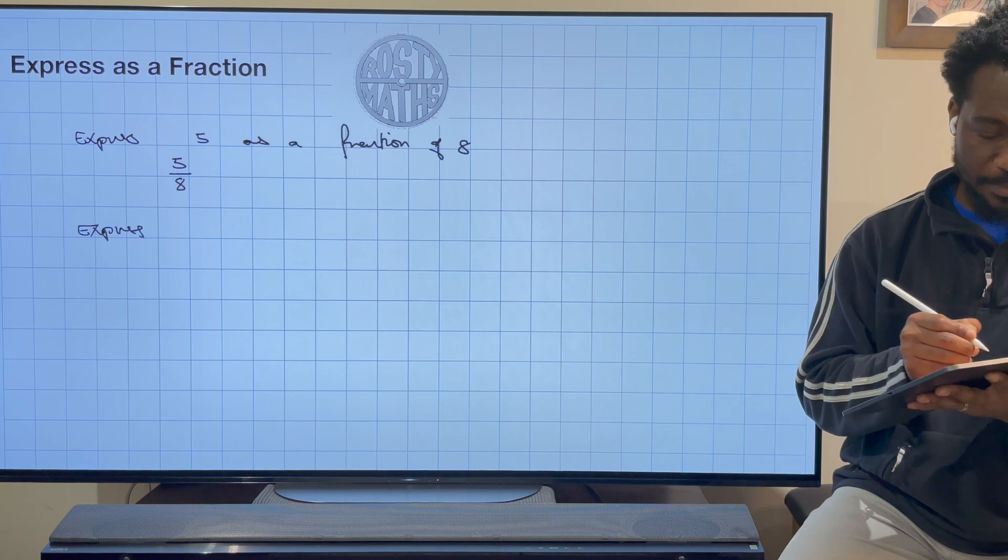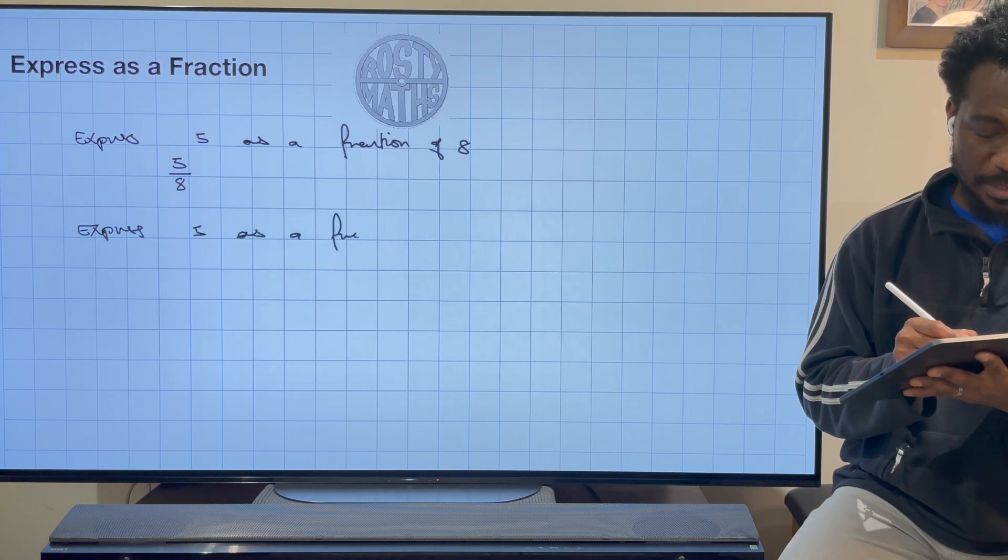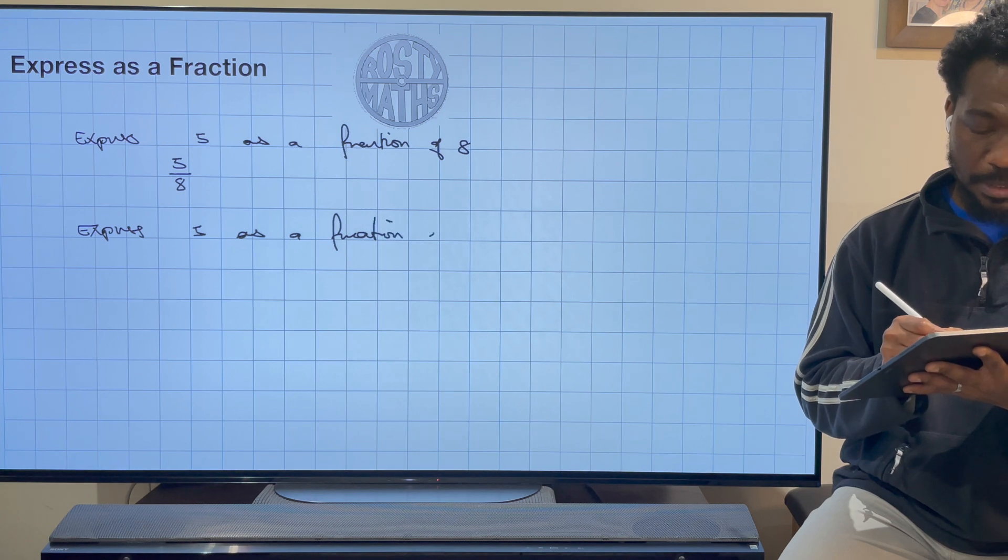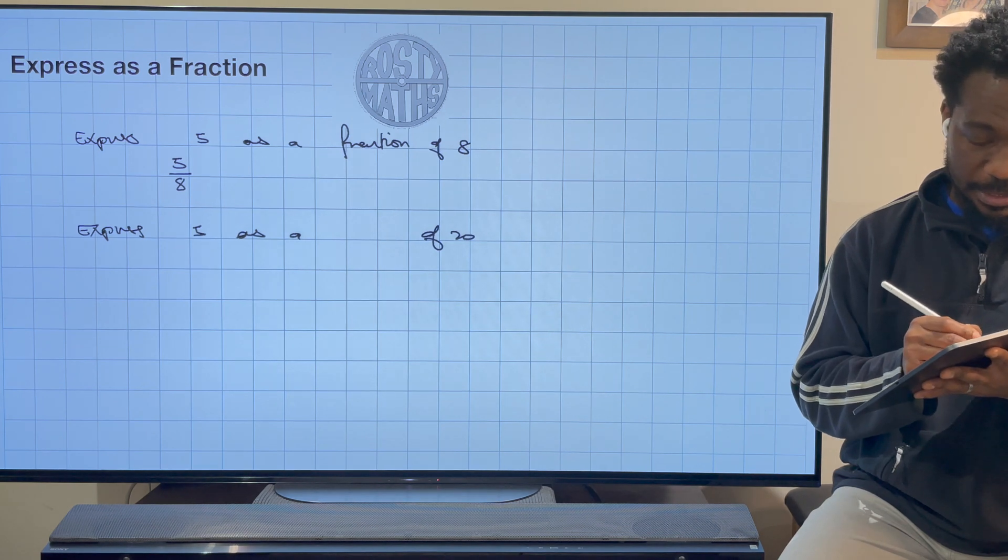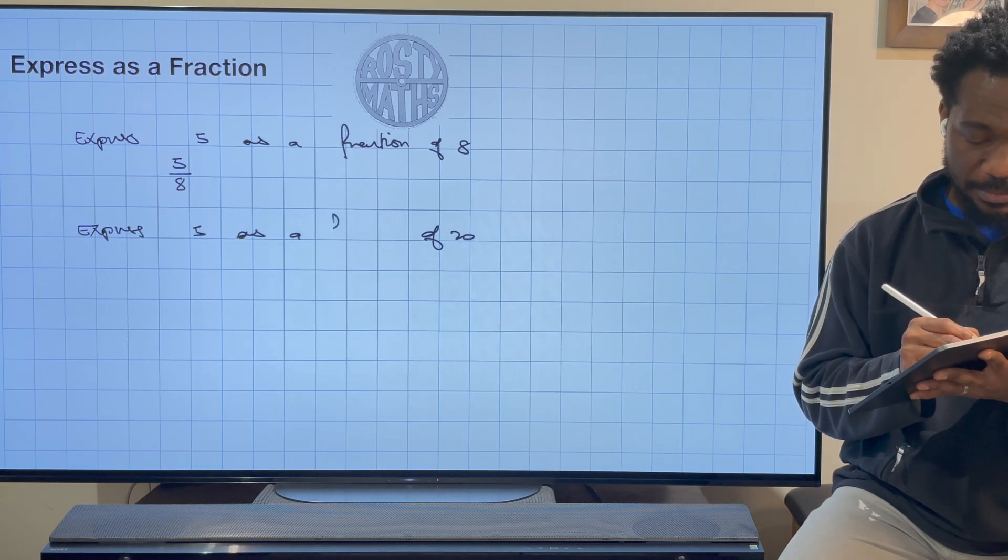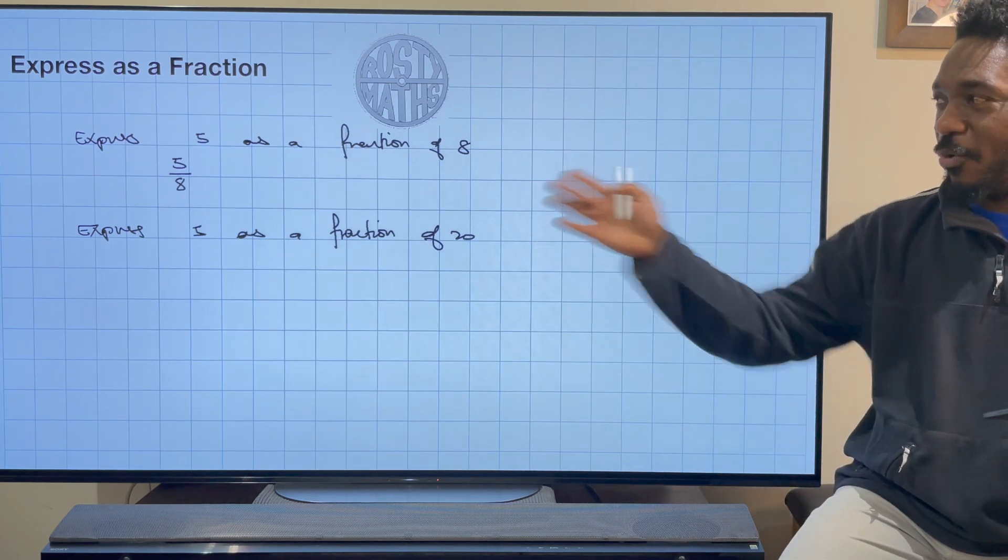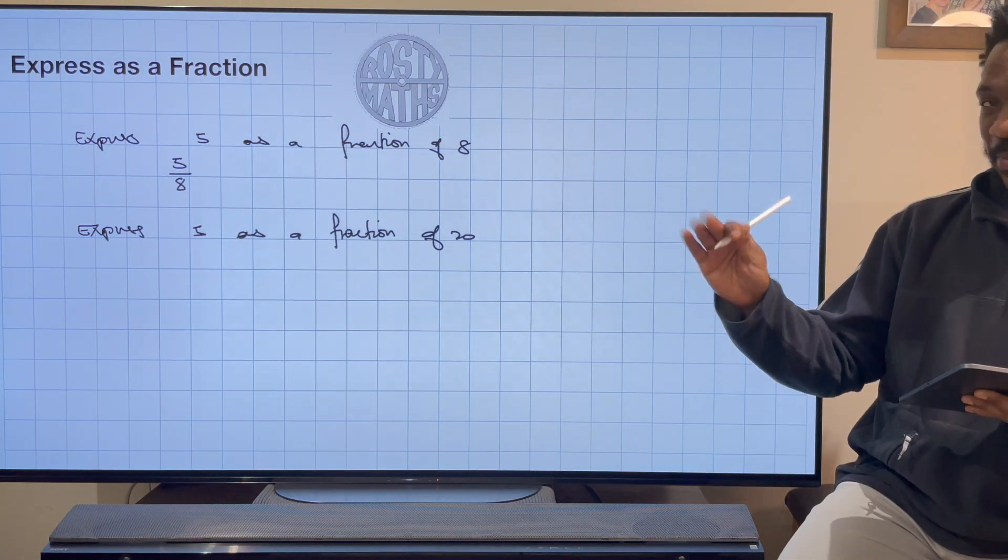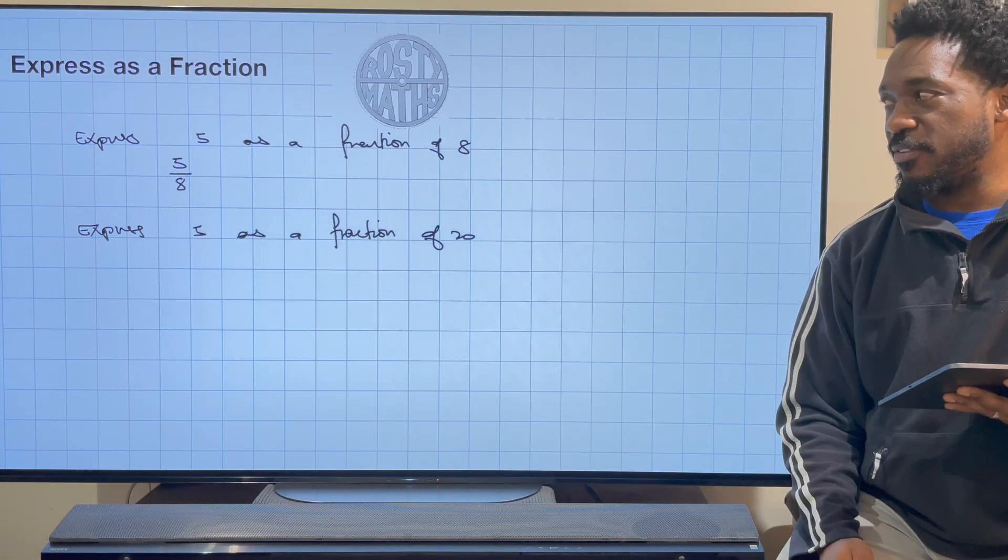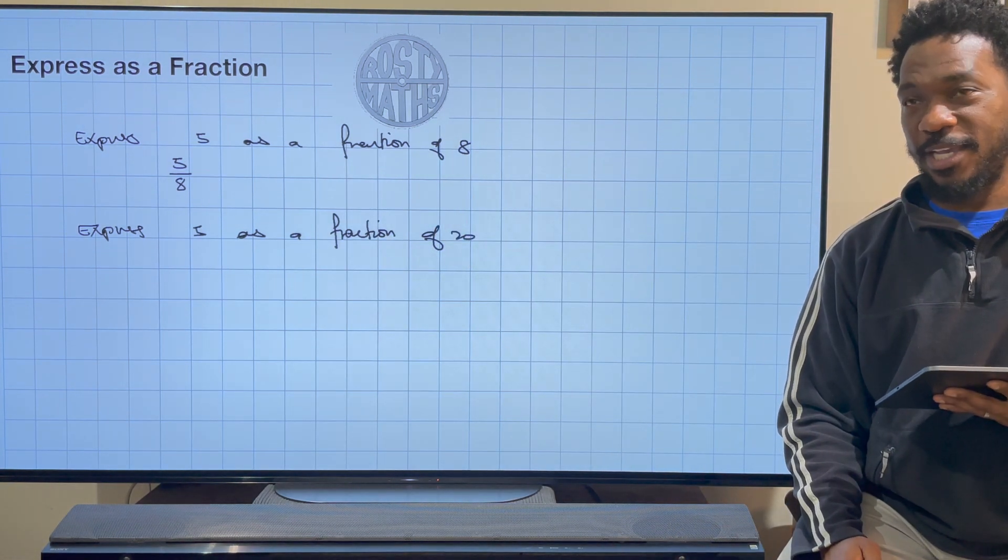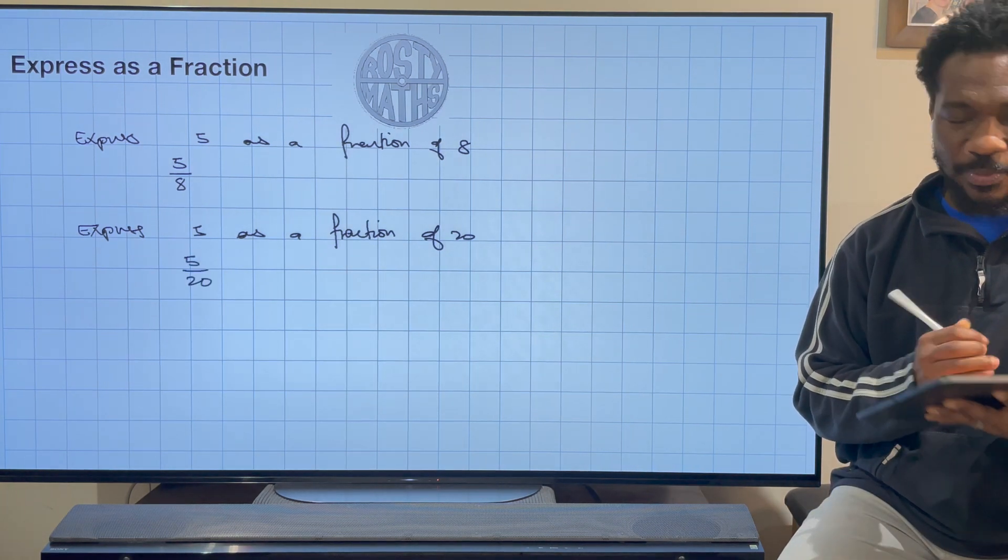So let's go again. We're going to express 5 as a fraction of 20. I probably should go to my writing class again just to get my writing going, because as I'm writing and talking I tend to write a lot quicker and it gets a bit scruffy. I do apologize for that. Anyway, express 5 as a fraction of 20. Here we go again, 5 as a fraction of 20. Easy, 5 divided by 20.